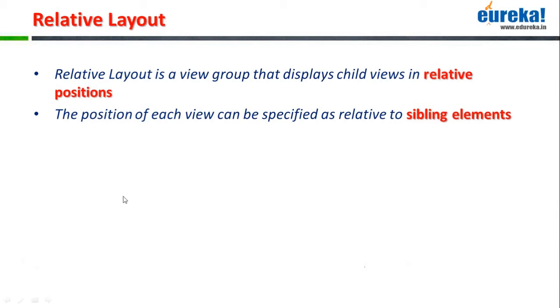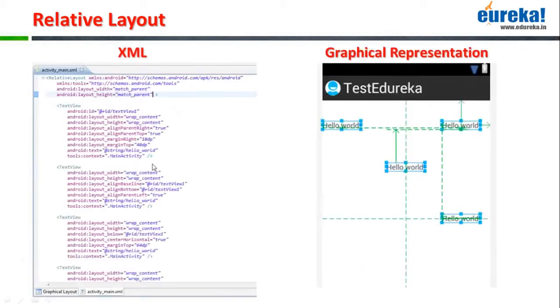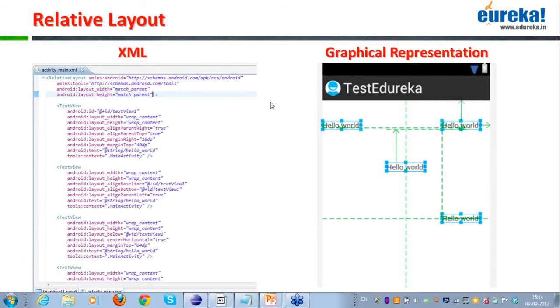Suppose I have a view here — I have view 1, and I need to draw a view just beneath that view. In that particular case I'll be using a RelativeLayout. Let me just show you an example of it.